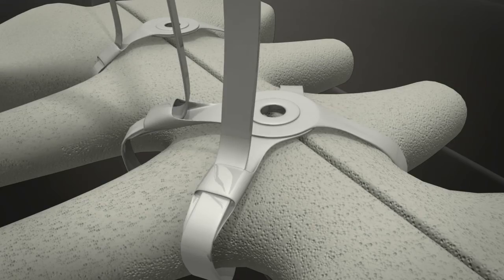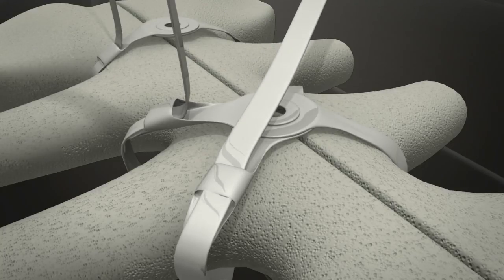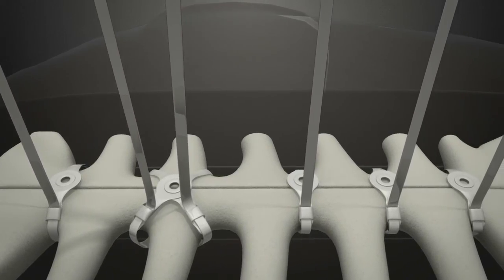At this point, the closure is reversible by simply bending the straps back down to 0 degrees and loosening. When satisfied with the closure, the final security is performed.